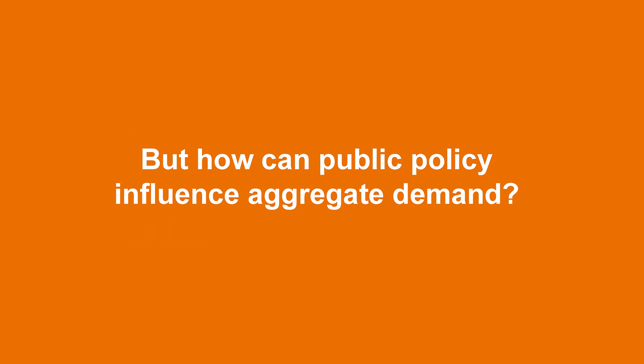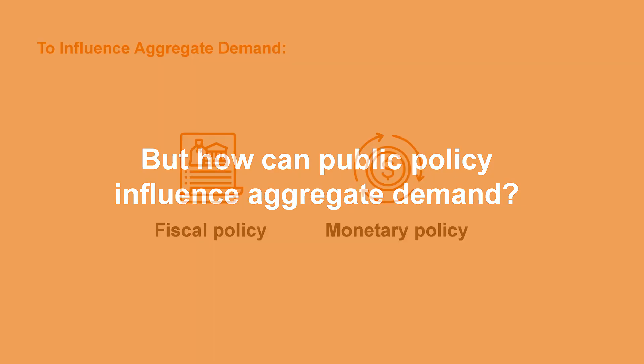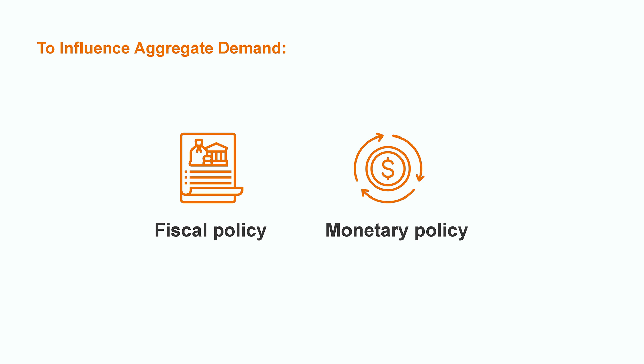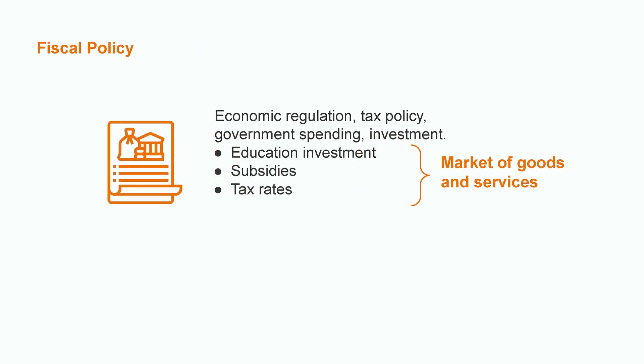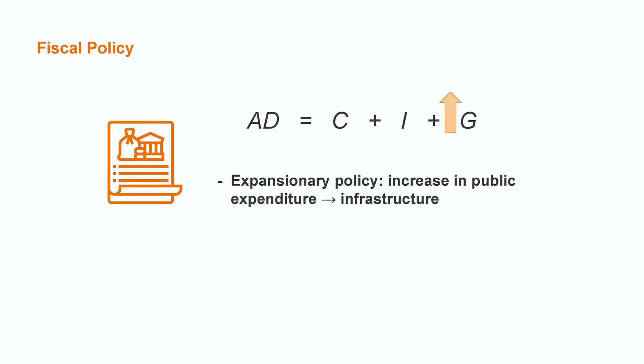But how does this mechanism work? How can public policy influence aggregate demand? There are two main types of public policy to influence aggregate demand: fiscal and monetary. Fiscal policy involves economic regulation, tax policy, and government spending decisions, which can all have an effect on long-term growth by influencing the decisions that people and businesses make. This also includes investments such as education, healthcare, or infrastructure. Most importantly for fiscal policy, its main impact is on the market of goods and services. The aggregate demand equation is the same as total income — in other words, it's equal to the GDP equation.